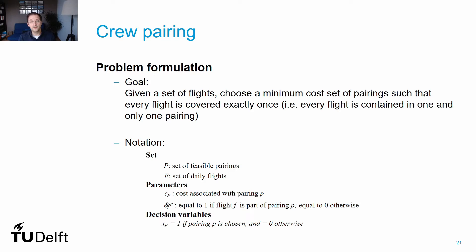The decision variables, XP, are binary, being equal to 1 if a given pairing P is chosen from the set of pairings, and 0 otherwise. We also need to know the cost associated with each pairing and information about whether a given flight is covered by a pairing P or not.